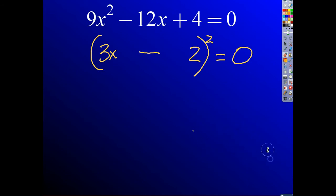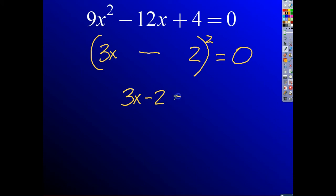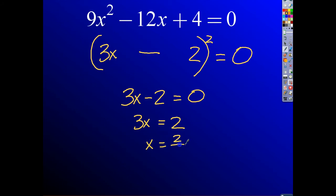Now let's solve 3x minus 2 squared equals 0. Setting 3x minus 2 equal to 0, we get 3x equals 2, divide by 3, and x equals 2 thirds. There you have it. If you plug it in, it will work.